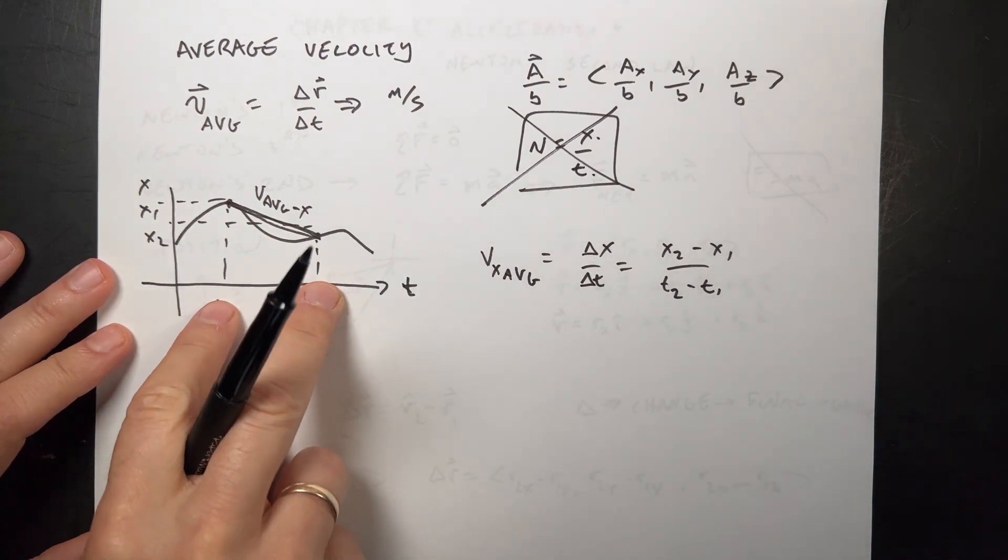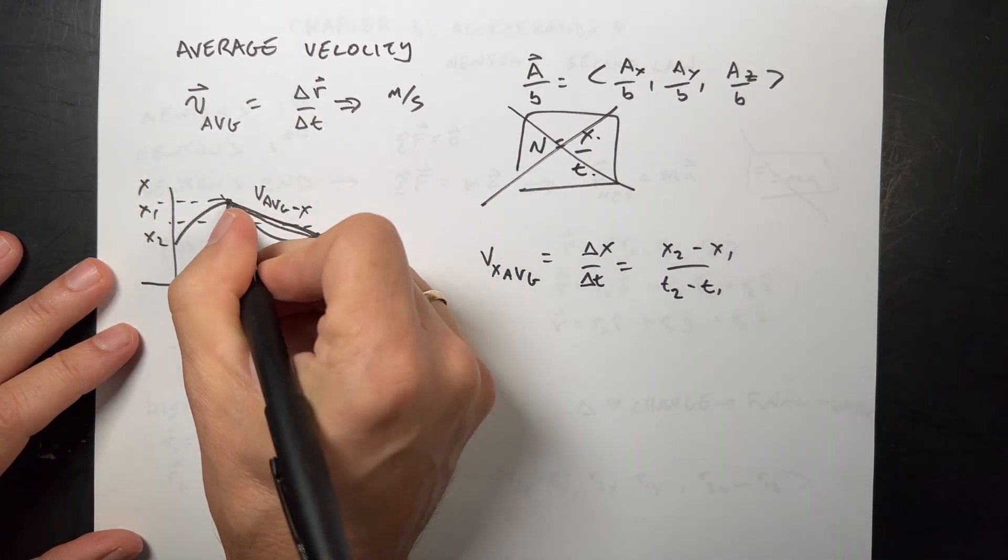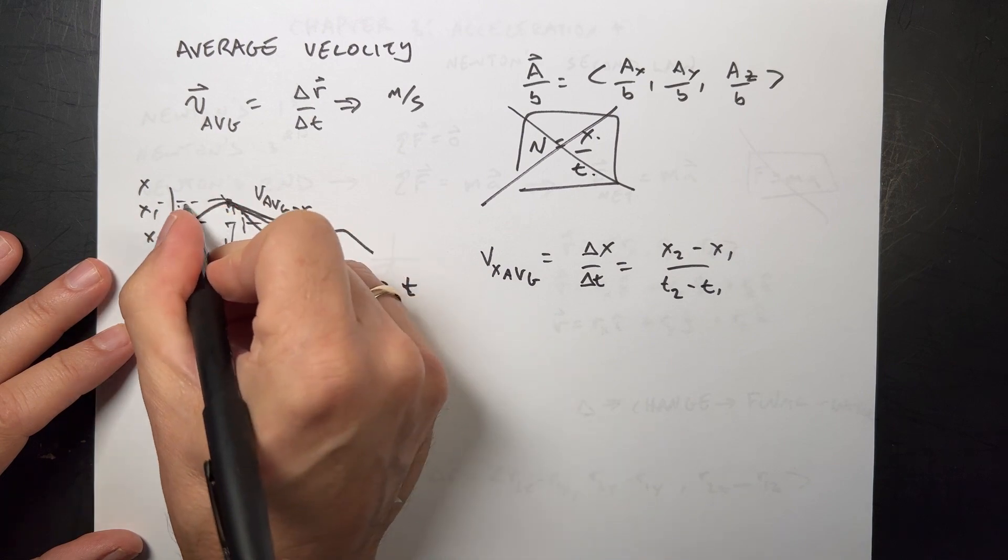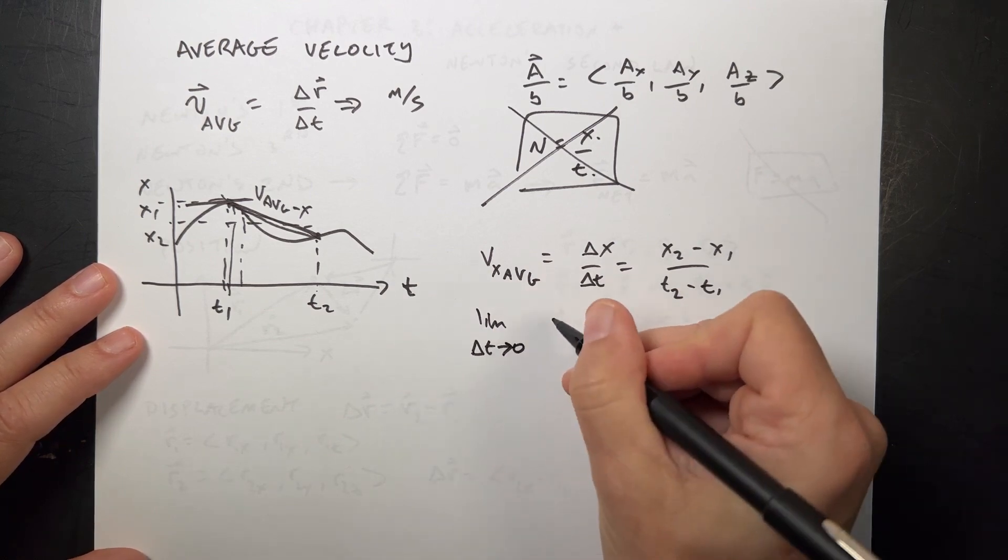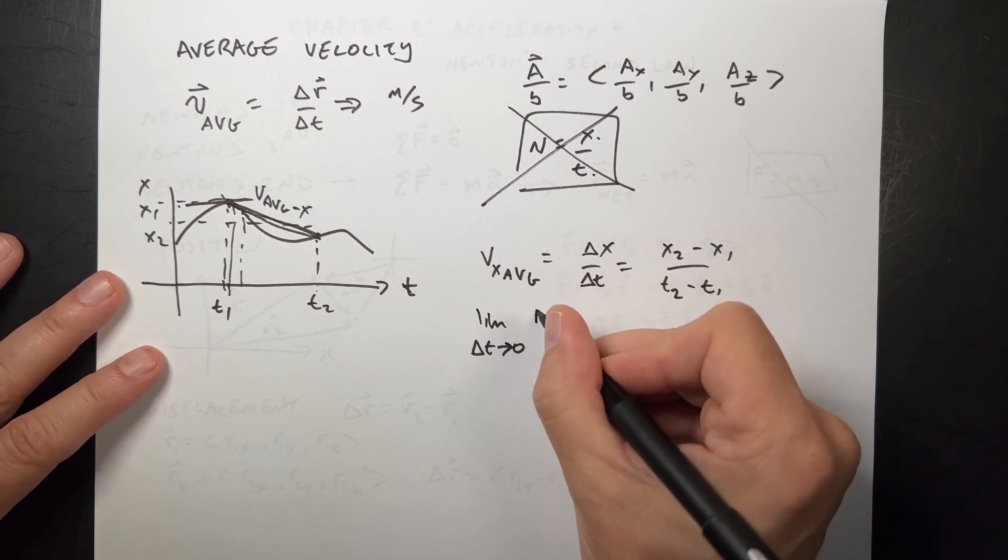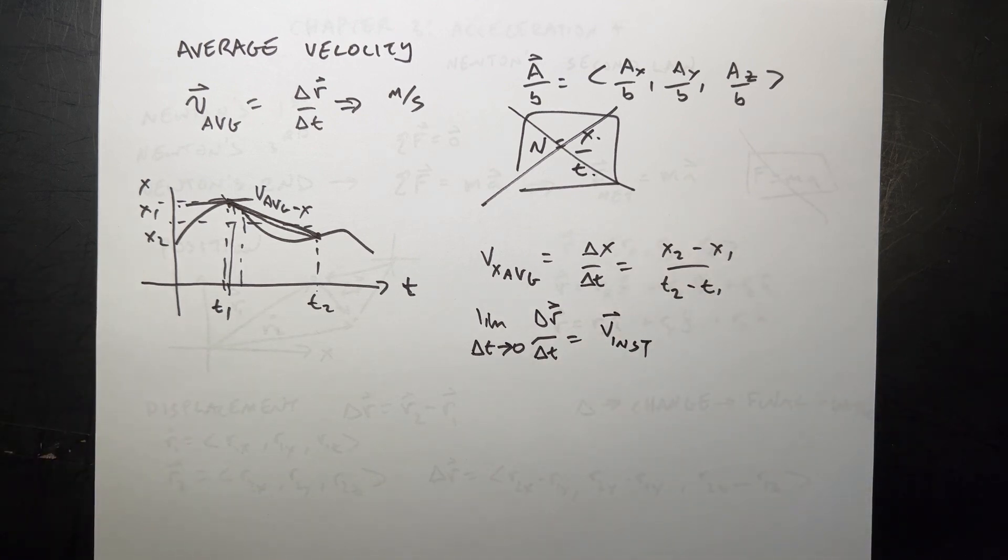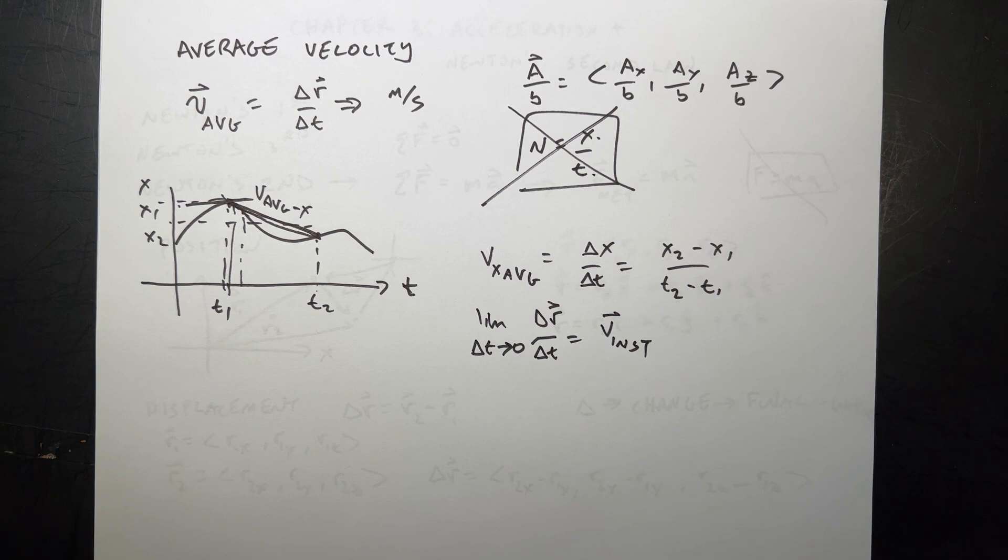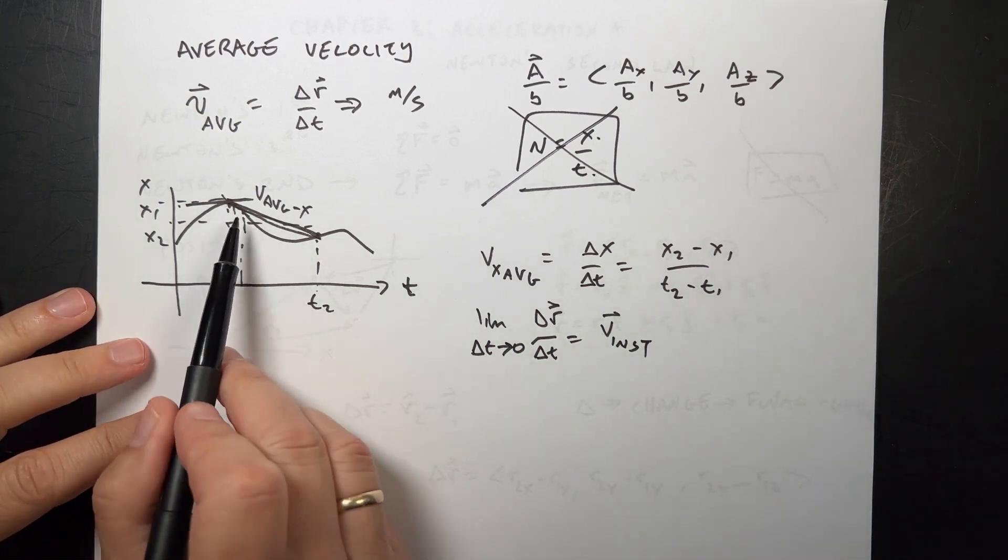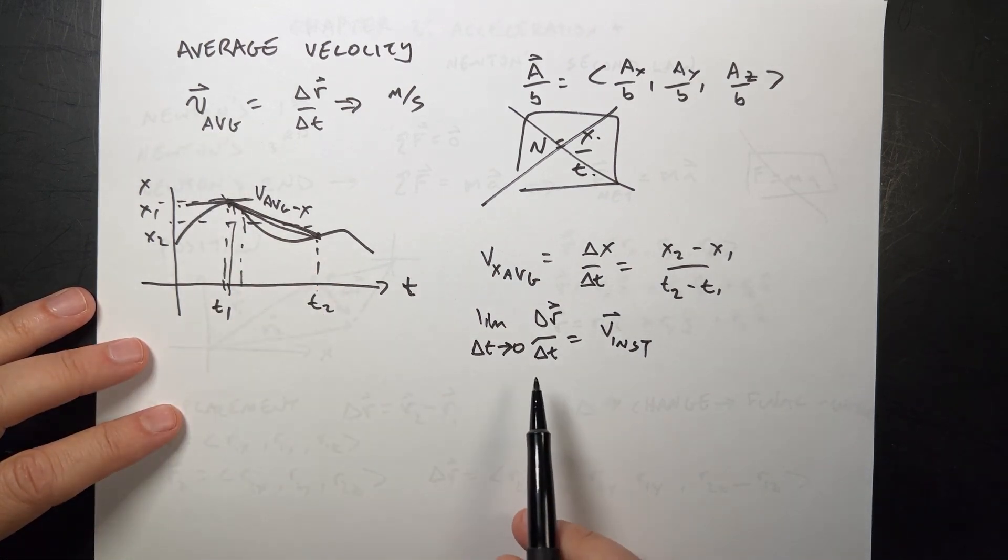If I let this time interval get smaller and smaller and smaller, you'll notice that this is going to change. And in fact, if I have a super tiny time interval right there, then my average velocity looks like the tangent of that line. So if I take the limit as delta T goes to zero of delta R over delta T, I get what's called the instantaneous velocity. It's not an average anymore, it's instantaneous. If you've taken calculus, you may see this looks like the definition of a derivative. If you have not taken calculus, then ignore what I just said because it doesn't really matter.